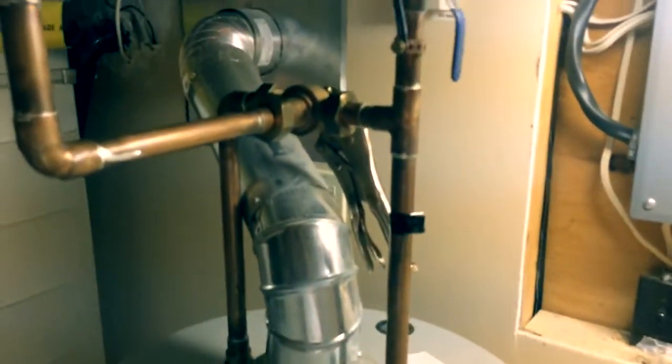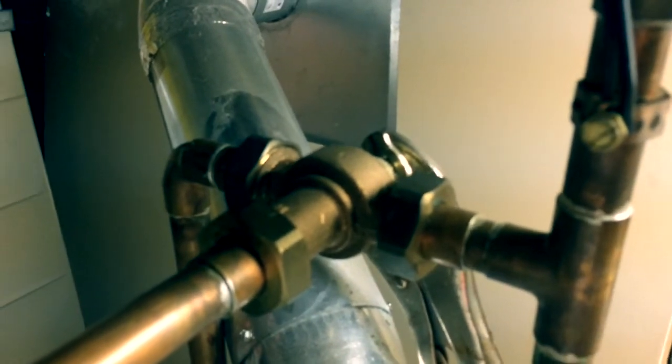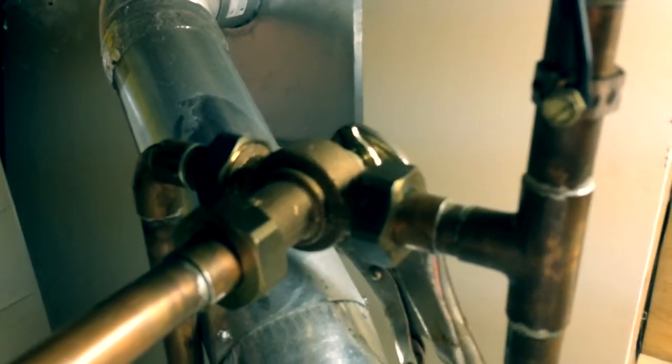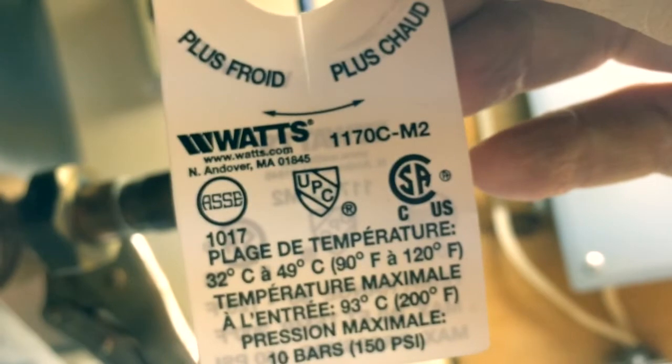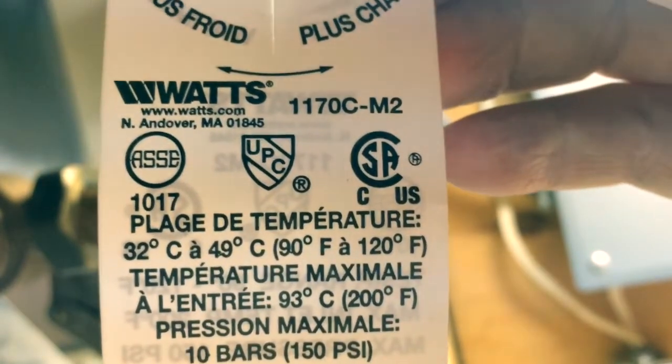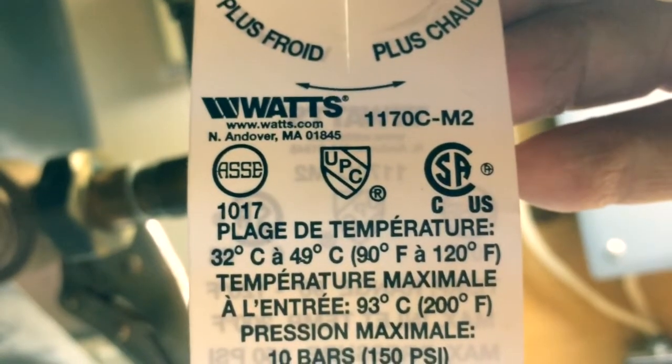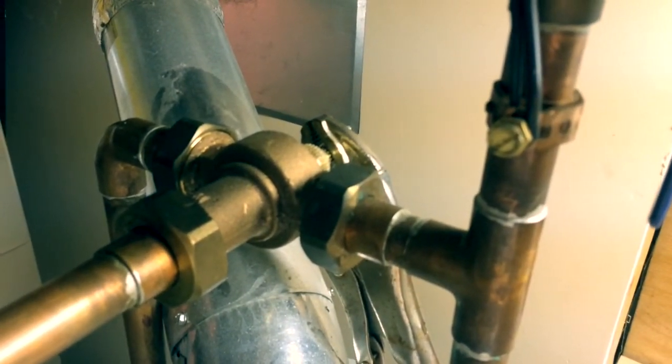So why do people put these things on there? My provincial government has mandated that all new installs of hot water tanks have to have this mixing valve at the top. I wouldn't buy this brand—it sucks. I mean, for a valve that has no electrical parts, very few moving parts, you would think that it should have a longer life expectancy than five years, three years. What I want to determine is, am I going to replace this offending piece of nonsense, or am I going to bypass it entirely?